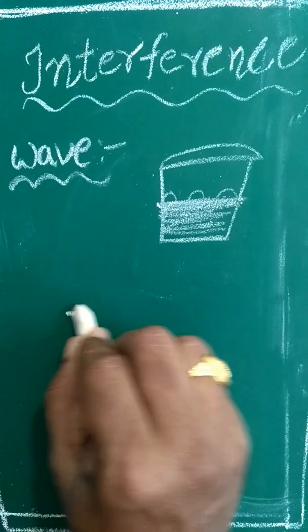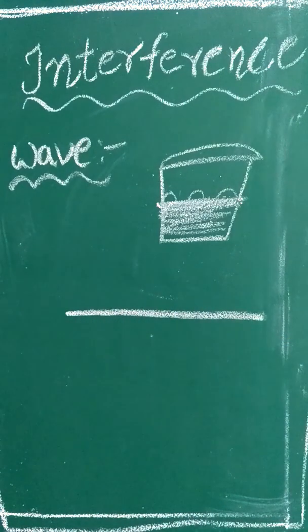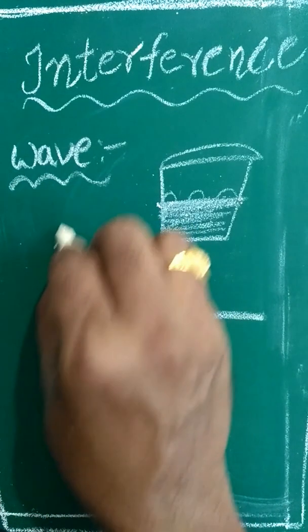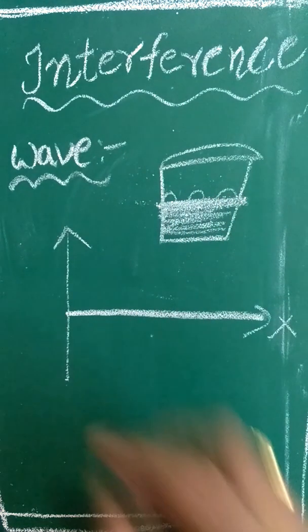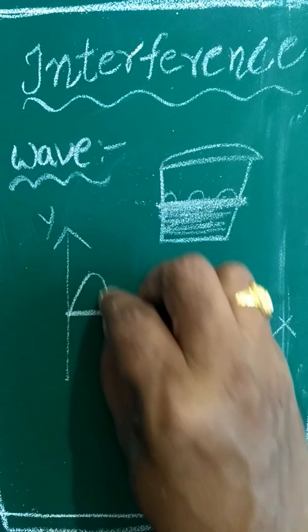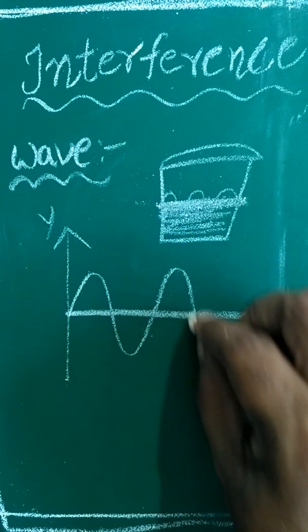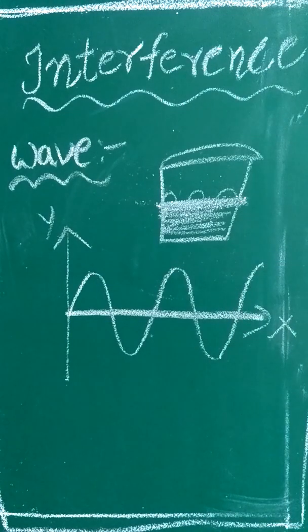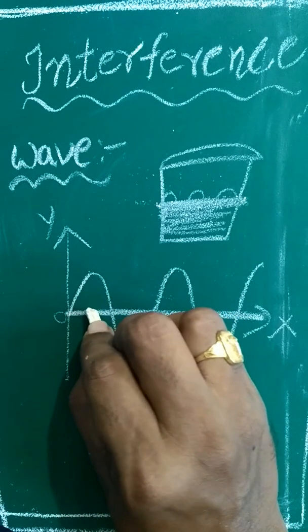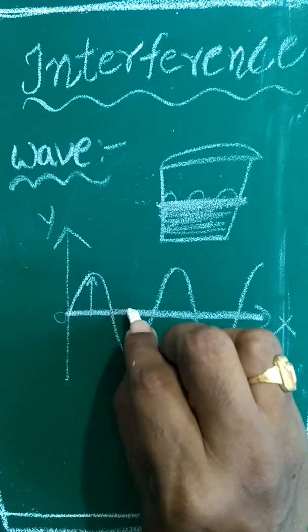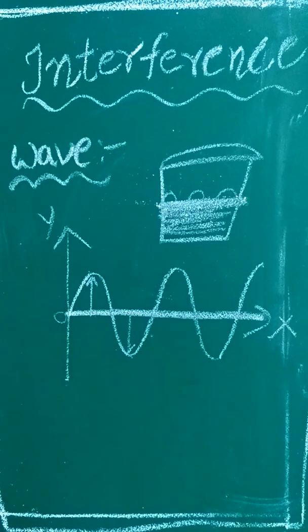The particles vibrate from their equilibrium position. For example, this equilibrium position of the medium can be taken as the x-axis — this is the surface. This is the y-axis. We observe waves like this: from the main position, some particles are vibrating in the upward direction and some in the downward direction.